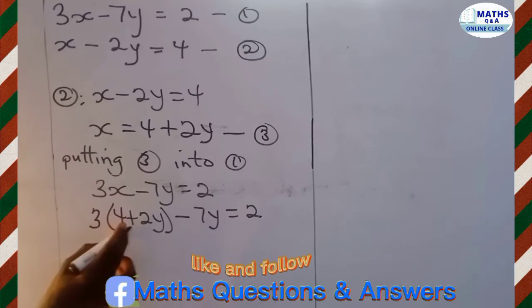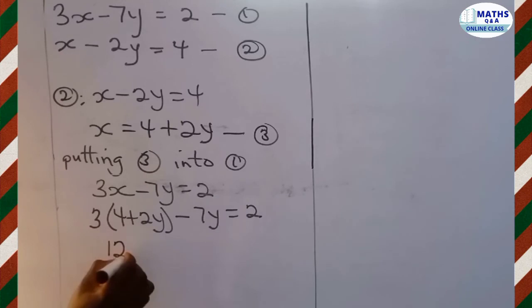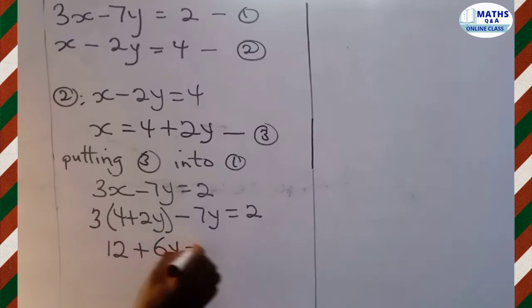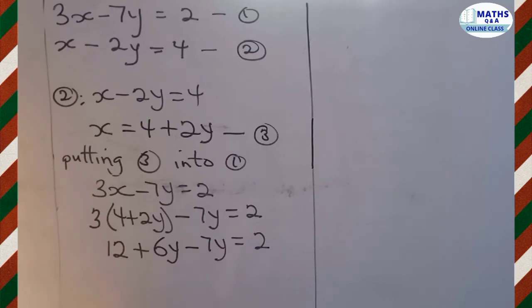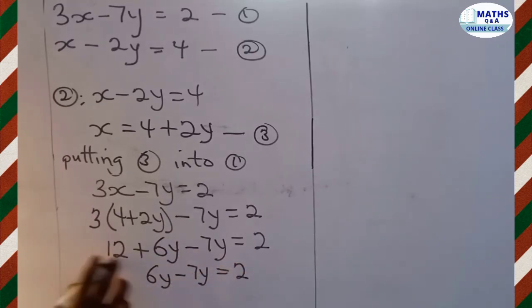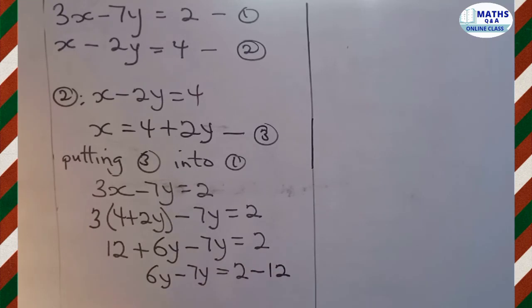Expanding: 3 multiplied by 4 gives 12, and 3 multiplied by 2y gives 6y. So we have 12 plus 6y minus 7y equals 2. Grouping like terms, we send the constant 12 to the other side — it's positive, so it becomes negative 12.